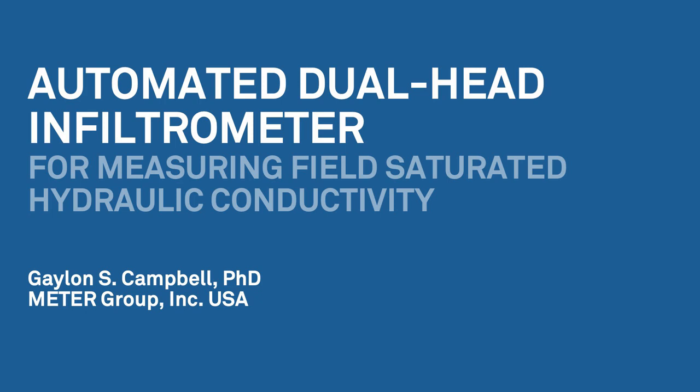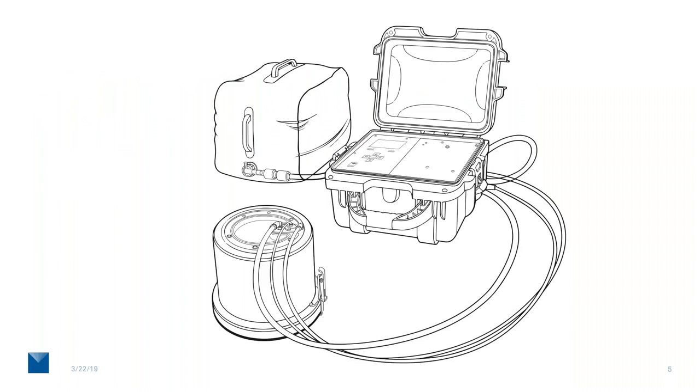Now the one that we want to talk about today specifically is the automated dual head infiltrometer. It measures field saturated hydraulic conductivity. We just have it shown schematically here, a device that sits on the soil surface, another device that controls it, and a source of water.